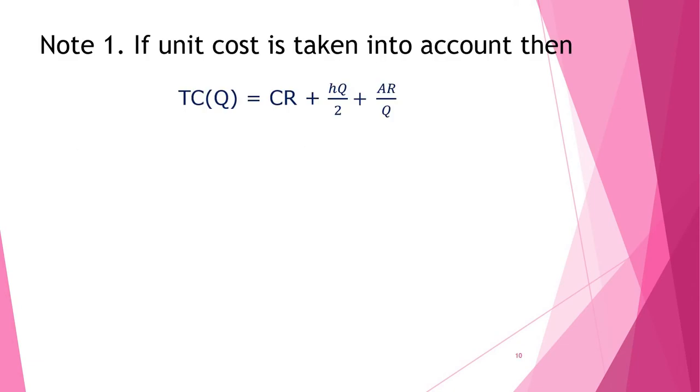Let us have some simple notes. If unit cost is taken into account, then total cost will be purchase cost, holding cost, and ordering cost summation. Now we have demand of R units and it is purchased at rupee C, so CR is purchase cost.